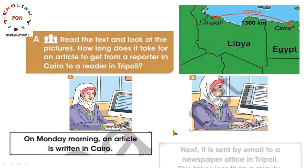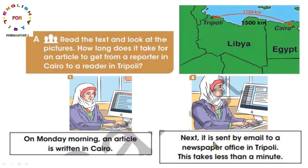الصورة الثانية: it is sent by email to a newspaper office in Tripoli - يرسل عن طريق الإيميل إلى مكتب صحيفة في طرابلس. This takes less than a minute - هذا يستغرق أقل من دقيقة. إذن إجابة السؤال: it takes less than a minute for an article to get from a reporter in Cairo to a reader in Tripoli.